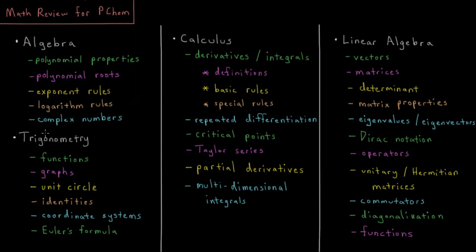The main four topics which are going to be important, starting with things you would have learned in high school, include algebra, trigonometry, calculus, and in some cases linear algebra. Linear algebra is more of an advanced topic, and most of the videos covering it are for computational chemistry-like applications, but it's included here because those videos are available as well.